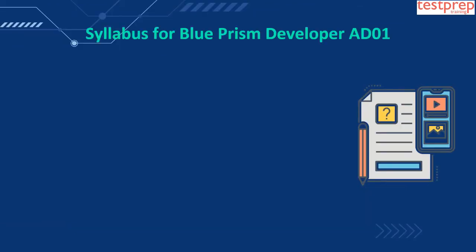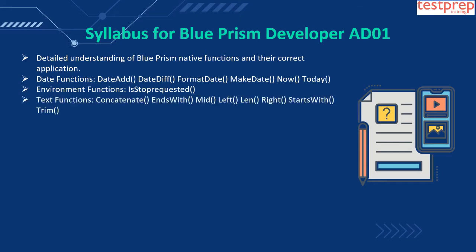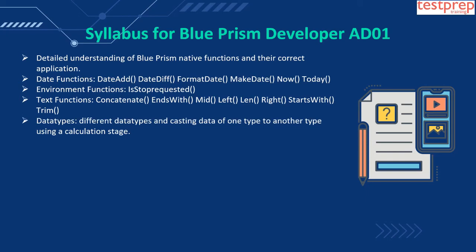Syllabus for Blue Prism Developer: one, detailed understanding of Blue Prism native functions and their correct application. Two, date functions: DateAdd, DateDiff, FormatDate, MakeDate, Now, Today. Three, environment functions: IsStopRequested. Four, text functions: Concatenate, EndsWith, Mid, Left, Len, Right, StartsWith, Trim.